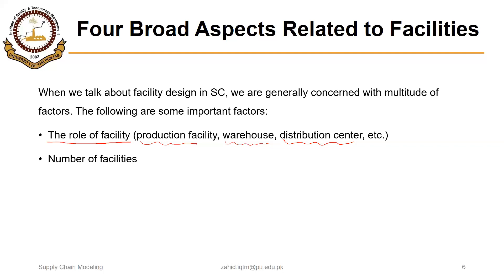The third factor is facility location — where physically that specific facility or number of facilities will actually be situated. And finally, capacity of the facility: if it is a production plant, what will be the production capacity of that plant? If it is a warehouse or distribution center, what will be the storage capacity of that distribution center or warehouse?